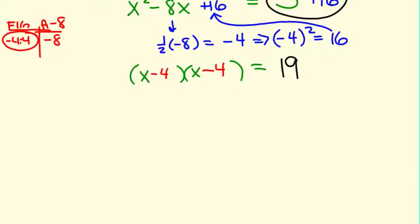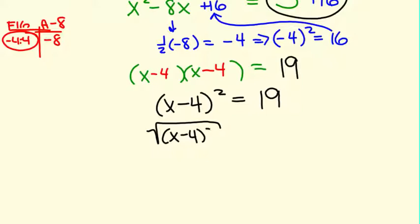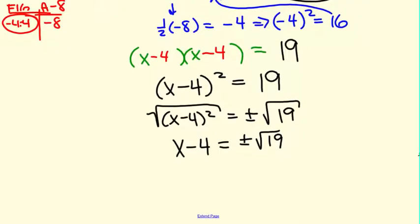We get 19. We get the same parentheses. So x minus 4 all squared equals 19. Finish solving by undoing. So square root both sides. We're left with x minus 4 on the left, plus or minus square root of 19 on the right. Add 4 to both sides. And there's our exact answer.